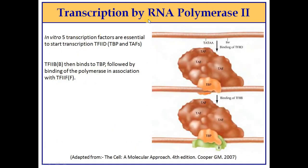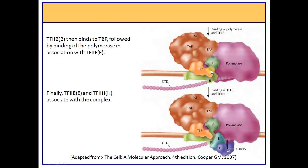Under in vitro conditions, five transcription factors are absolutely essential to start transcription initiation by RNA polymerase 2. The first factor recruited to the promoter region is TF2D, which contains TBP (TATA binding protein) and TAF subunits. TF2D binds to the TATA box and recruits TF2B to the promoter region. Following that, RNA polymerase 2 along with transcription factor TF2F is recruited to this complex.